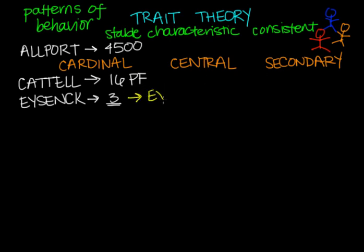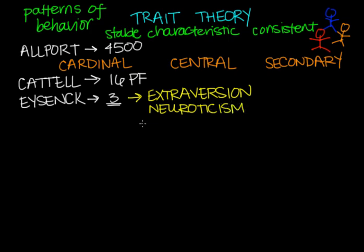So the three major dimensions of his theory. The first is extroversion. Extroversion versus introversion, and that is the degree of sociability. The second is neuroticism. Neuroticism is our emotional stability. And the third is psychoticism. Psychoticism is the degree to which reality is distorted.